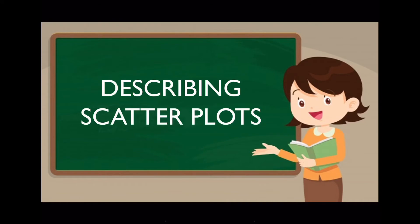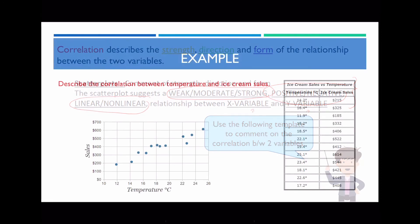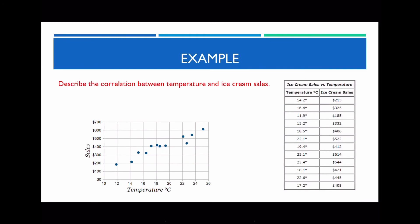What we're going to be looking at now is describing the correlation between two variables on a scatterplot. There are three criteria you need to address: strength, direction, and form. I know that some of you struggle with these word descriptive responses, so I've provided a template. All you really need to do is select the correct response — select the correct strength, identify the direction, and the form. If a context is given, such as temperature and sales, you need to include that where the underlined parts are.